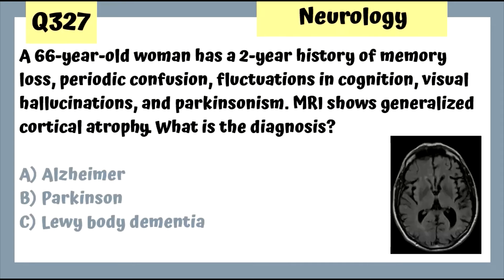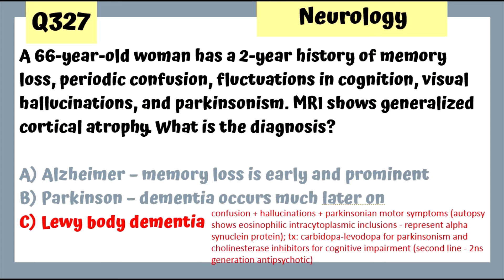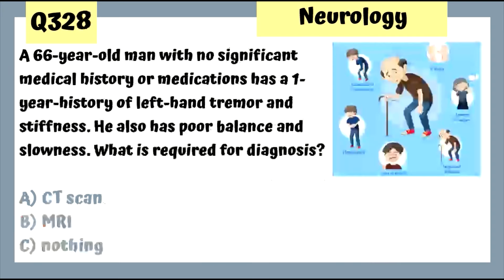Question 327: A 60-year-old woman with two-year history of memory loss, periodic confusion, fluctuating cognition, visual hallucinations, and Parkinsonism; MRI shows generalized cortical atrophy — this is Lewy body dementia. Confusion, hallucinations, and Parkinsonian motor symptoms are present at the same time, as opposed to Parkinson's where dementia occurs much later.